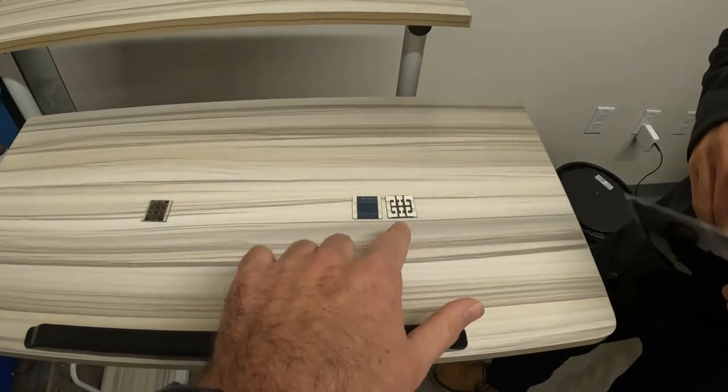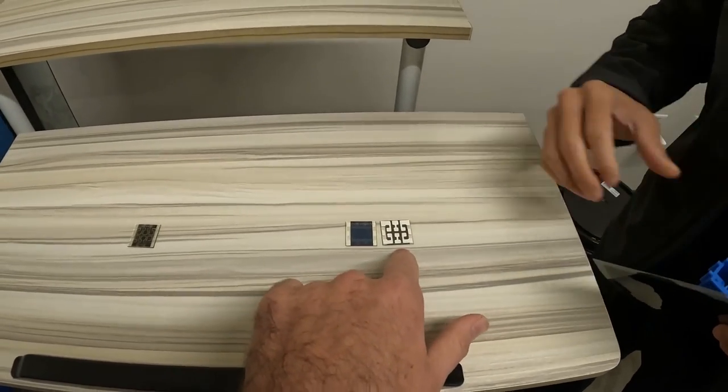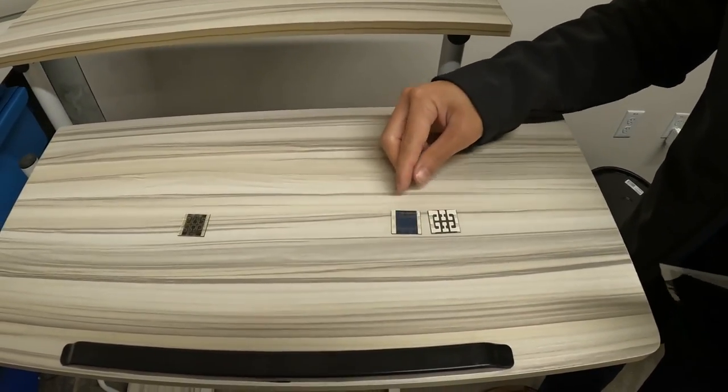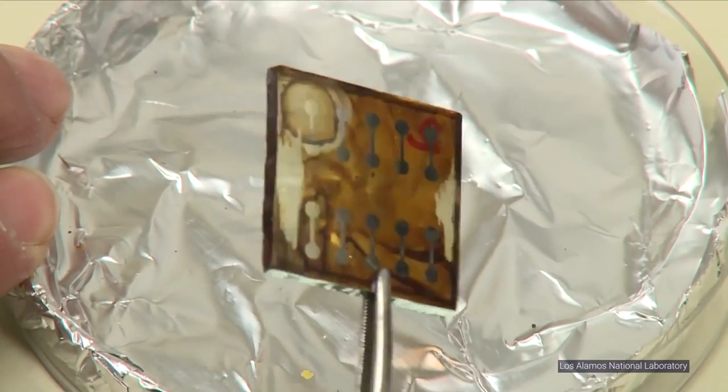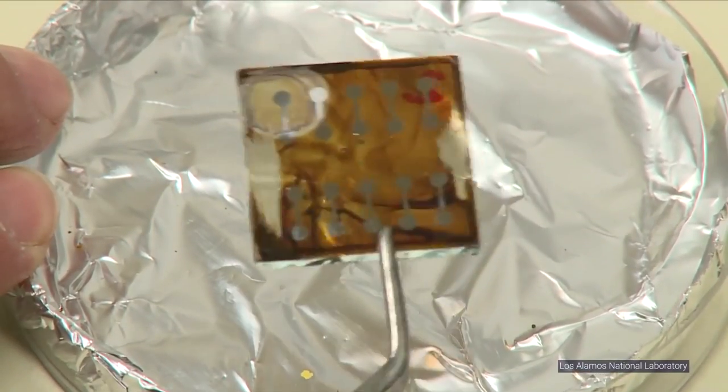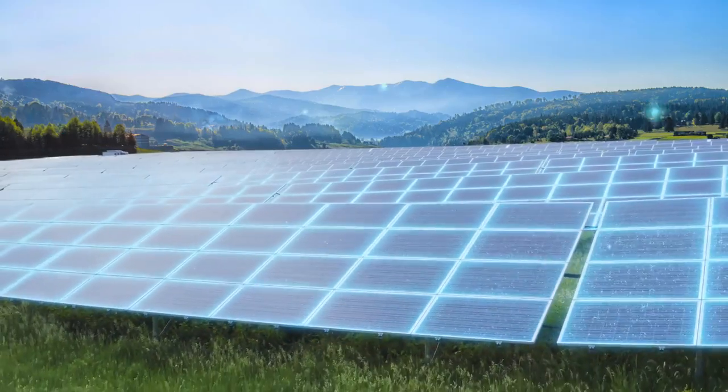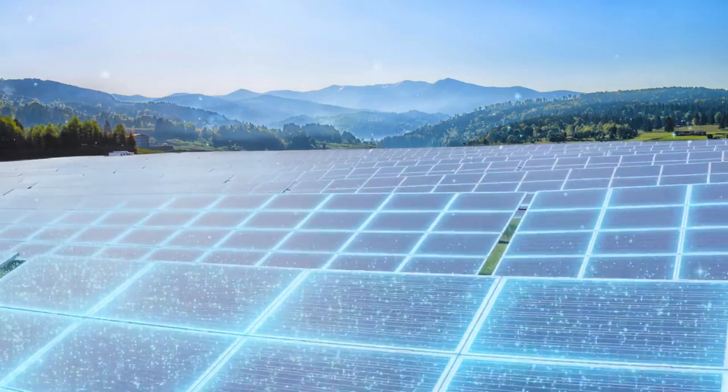But perovskite solar cells can be made in a form factor that's capable of much higher efficiency limits, pushing the boundaries of possibility for solar power. To understand why perovskites hold an advantage over traditional silicon solar cells, let's first do a basic refresh of how photovoltaic cells convert sunlight to electricity.